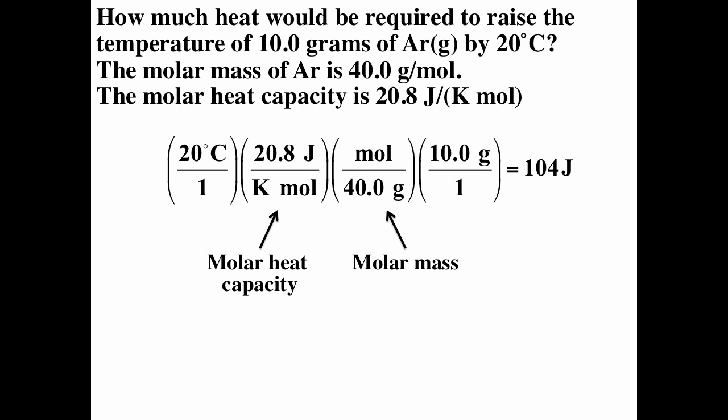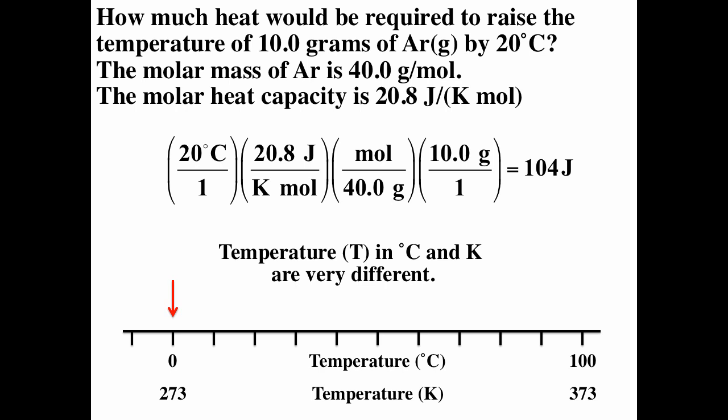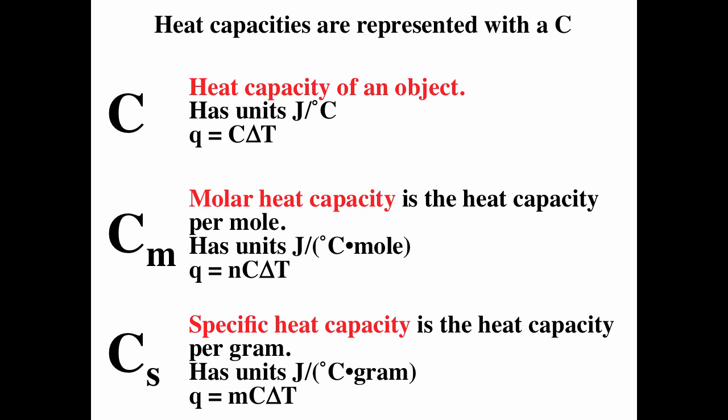We could ask how much heat is required to raise 10 grams of argon by 20 degrees. The molar mass of argon is 40 g/mol and the molar heat capacity is 20.8 J/(mol·°C). We convert grams to moles and apply the heat capacity and temperature change using unit analysis — grams cancel grams, moles cancel moles. For temperature changes, Celsius and Kelvin are equivalent: a change of 100°C equals a change of 100 K, so the units cancel correctly.